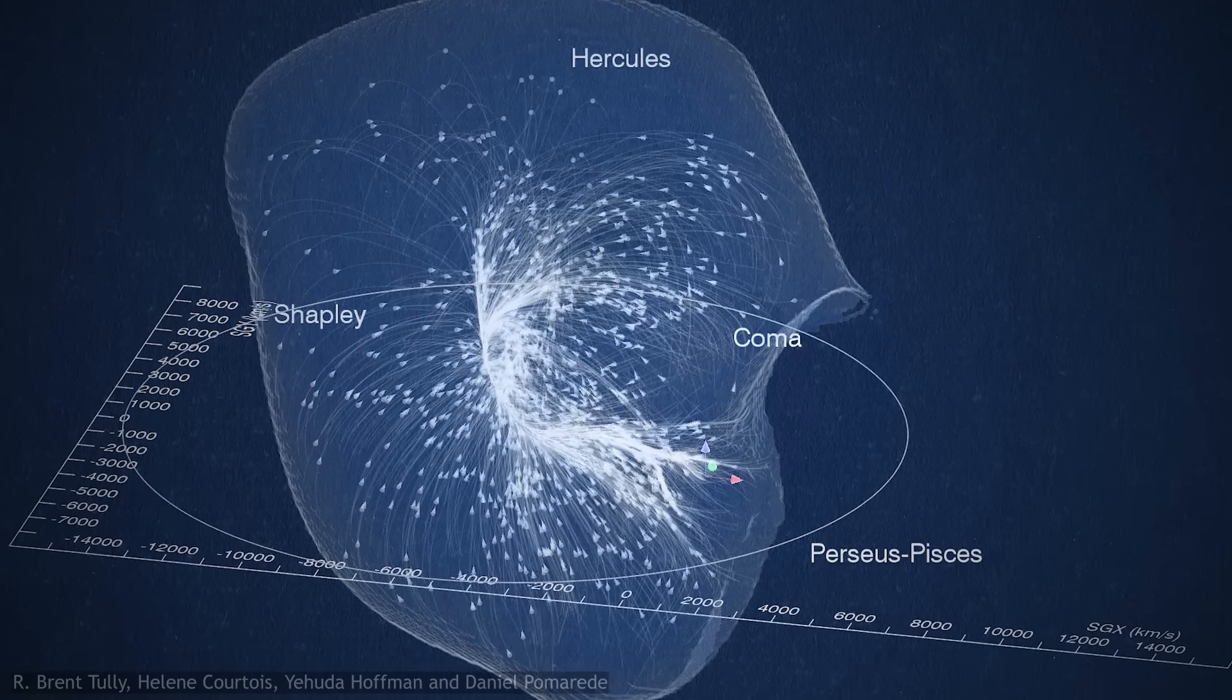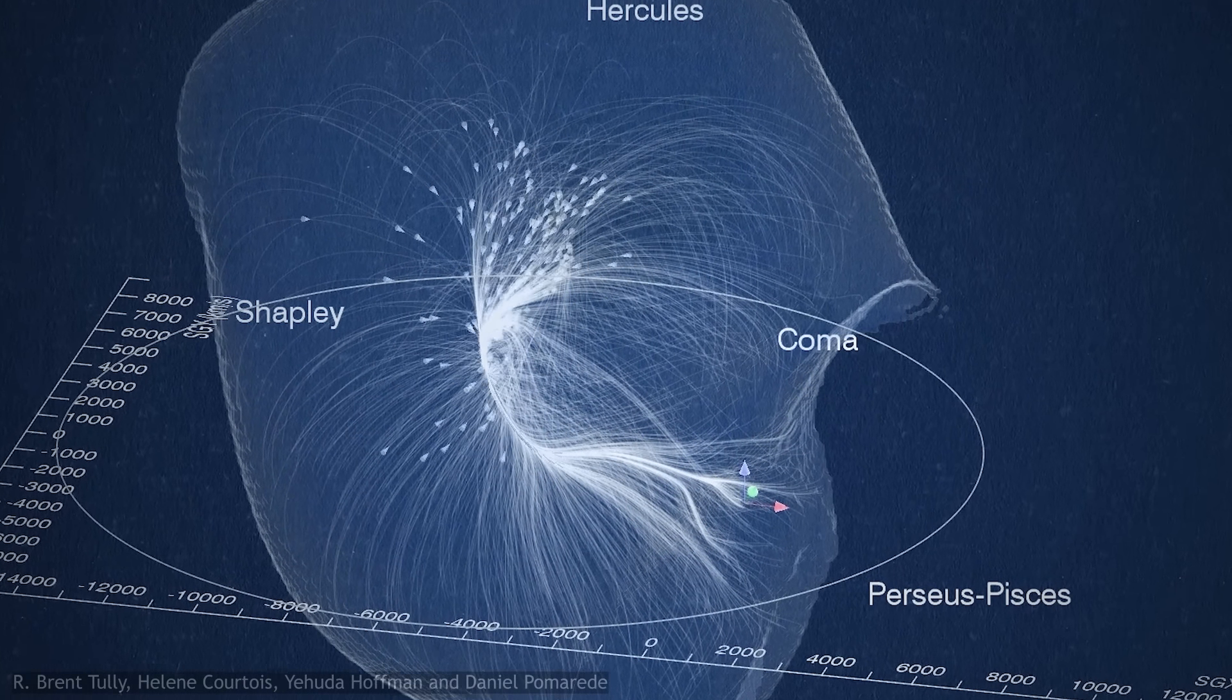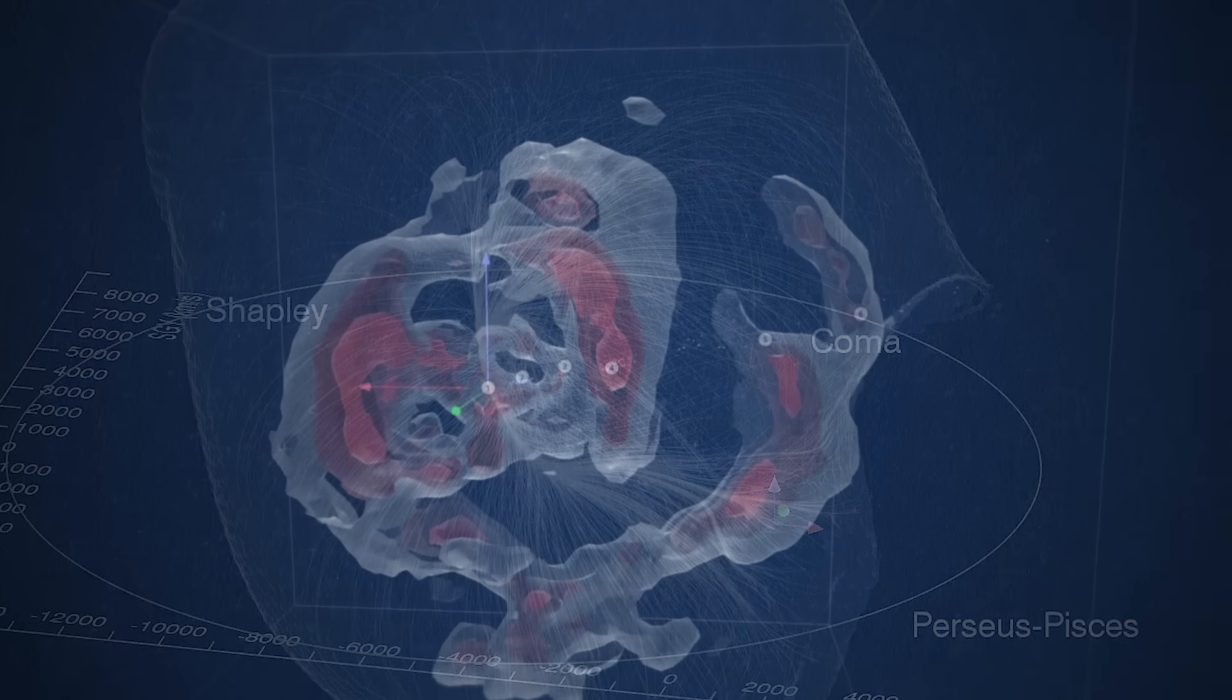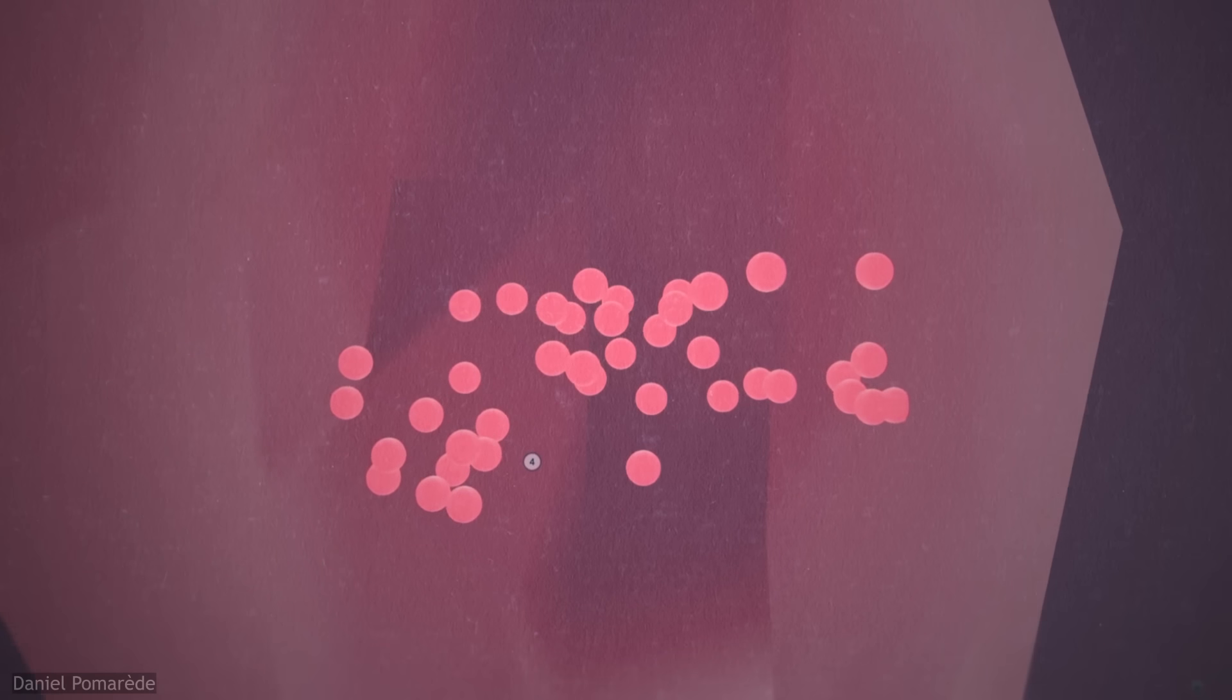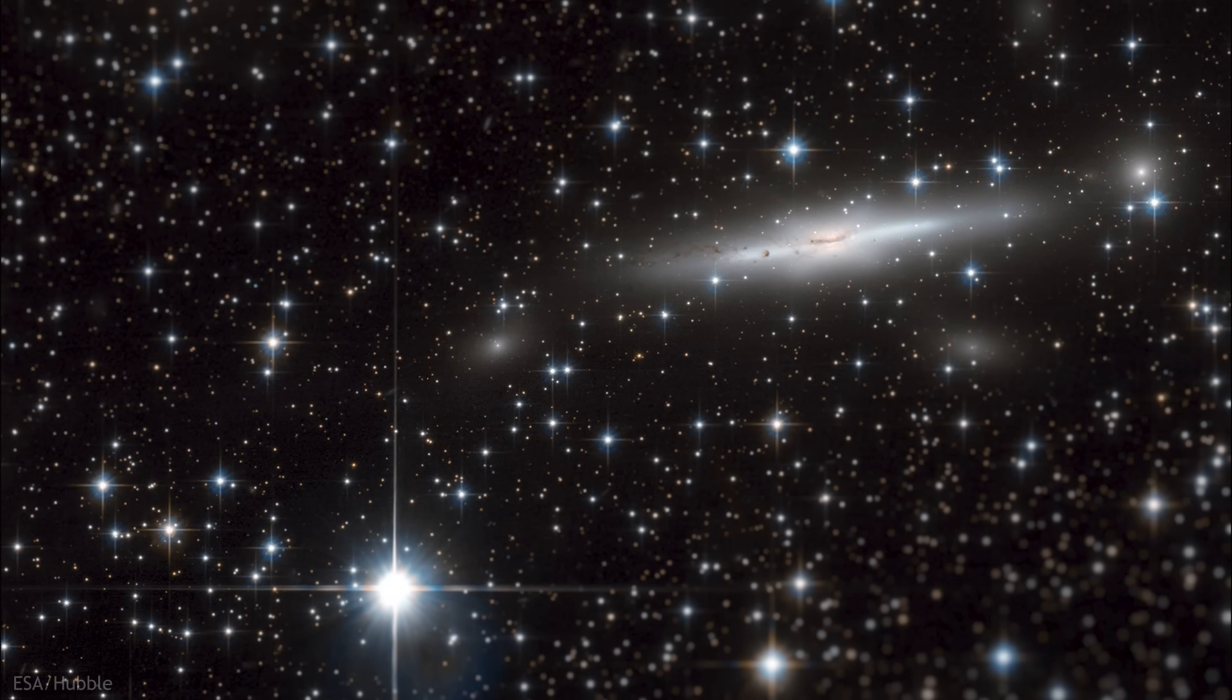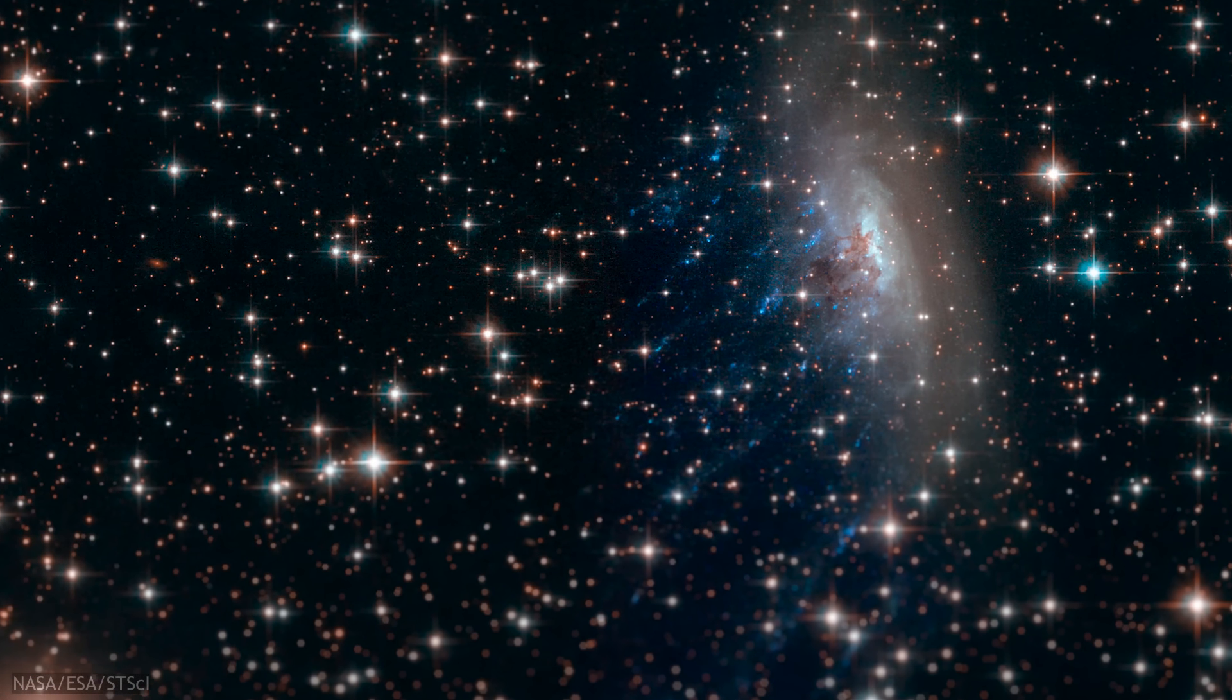As best we can tell, the heart of Laniakea, the focal point for the great migration of 100,000 galaxies including the Milky Way, is the Norma cluster, named for the constellation we must peer through to see it. It is several times larger than a typical galaxy cluster, and sits about 220 million light years away from us, and so even at a speed of over 100 km per second, the Norma cluster is so far away that our journey towards it would take over 100 billion years.